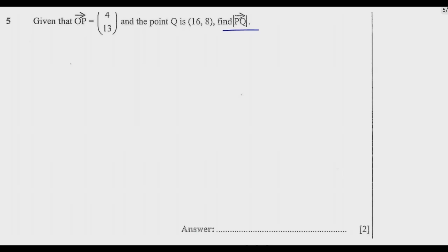Since this is in column vector, OP means P is equal to (4, 13). Why is that the case?